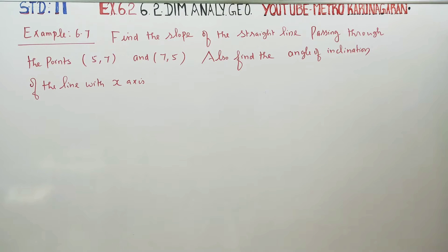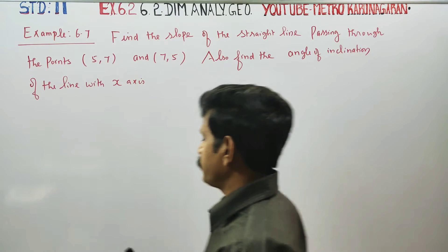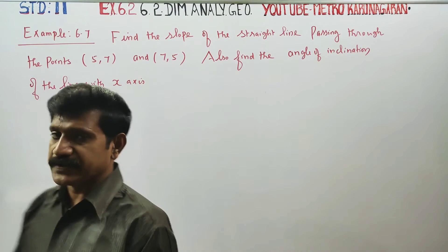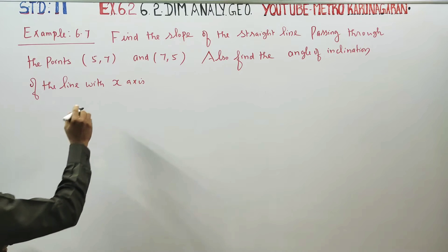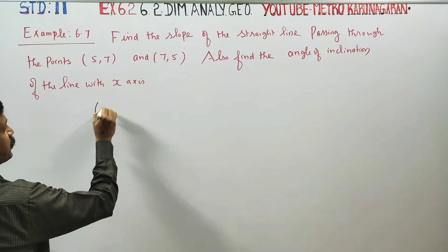Dear Learn Standard Students, I am Metro Karanagaran. In Example 6.7, find the slope of the straight line passing through the points (5, 7) and (7, 5).